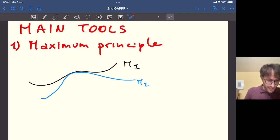It says the following thing. Suppose to have two hypersurfaces, M1 and M2. Suppose that there is a common point P, so P belongs to the intersection of the two.